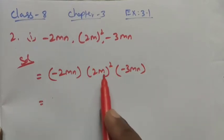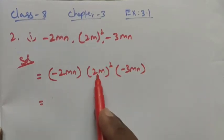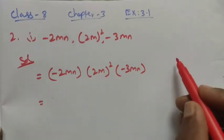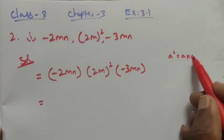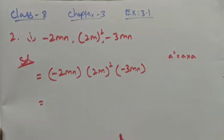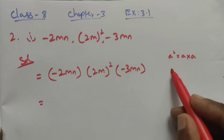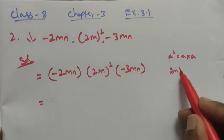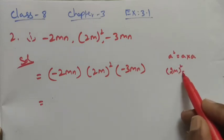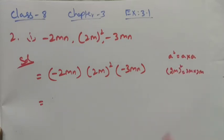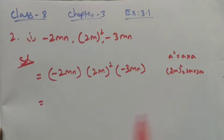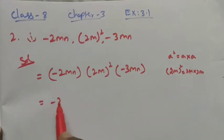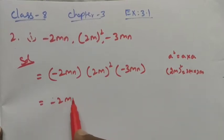First, we have the square term, so we expand it. (2m)² means 2m into 2m. That is the expanded form. Then 2 times 2 is 4, and m into m is m². So (2m)² = 4m².